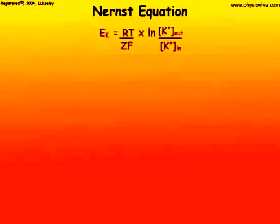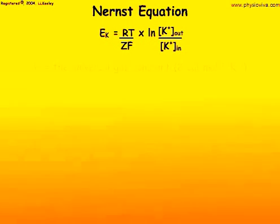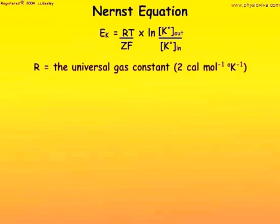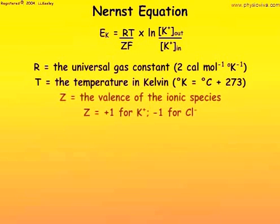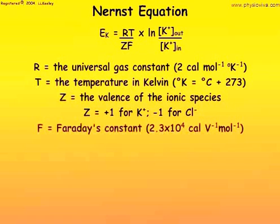Here is the Nernst equation. The parameters for the Nernst equation are as follows. R is the universal gas constant. T is the temperature expressed in degrees Kelvin. Z is the valence of the ion of interest, including its positive or negative polarity. F is Faraday's constant.